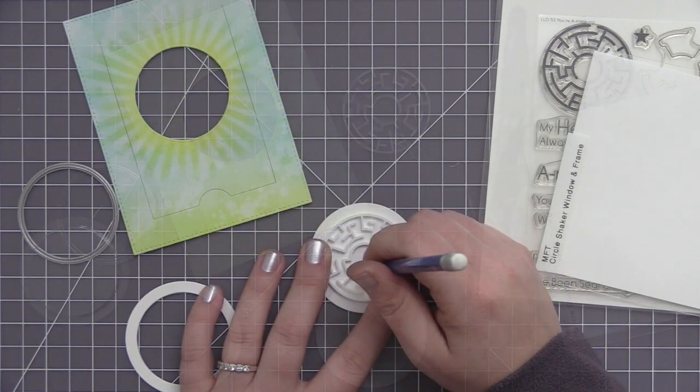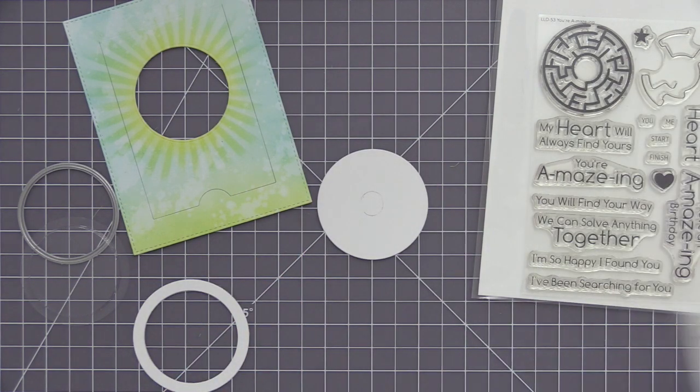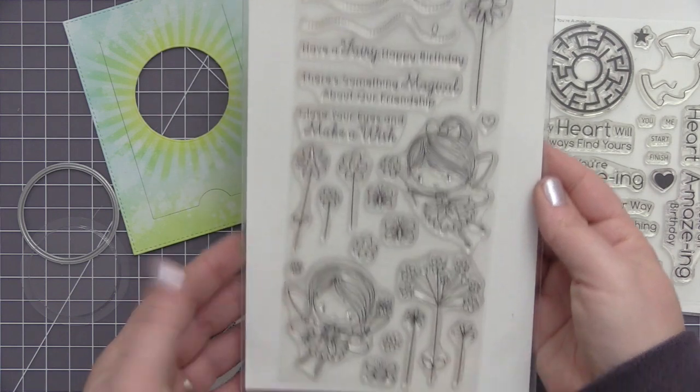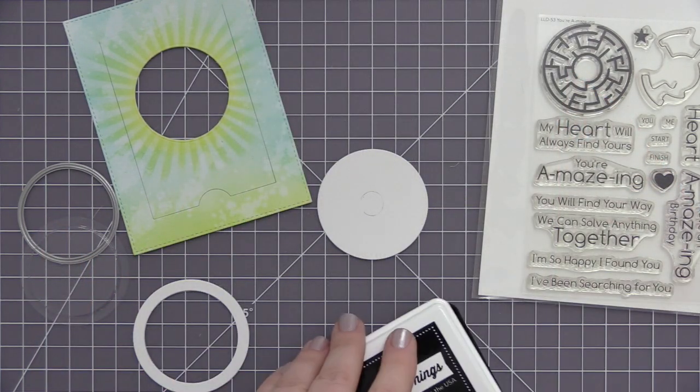I also need to cut out a second circle, this is going to be a solid circle and I'm using the circle stacks dies to cut this one. I just need to make sure it's going to fit in behind the circle shaker pouch and be able to have that adhere to it.